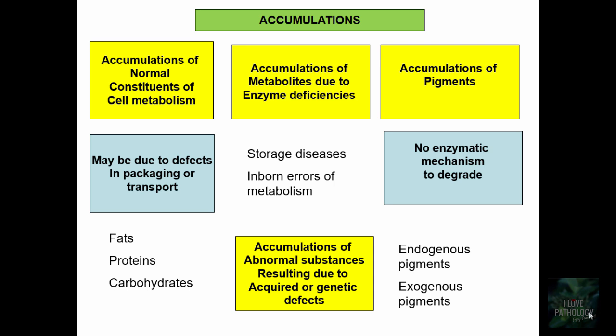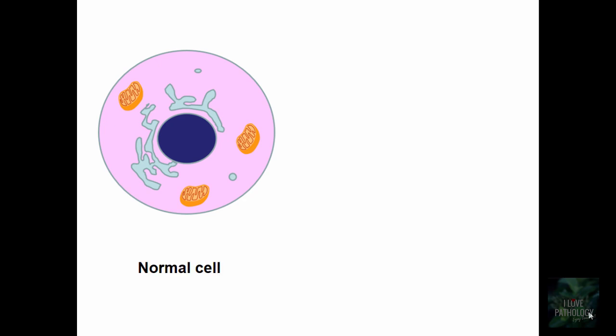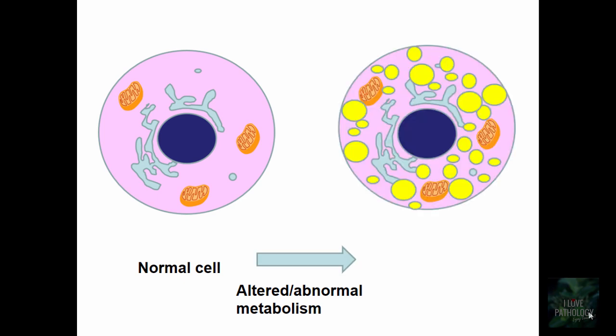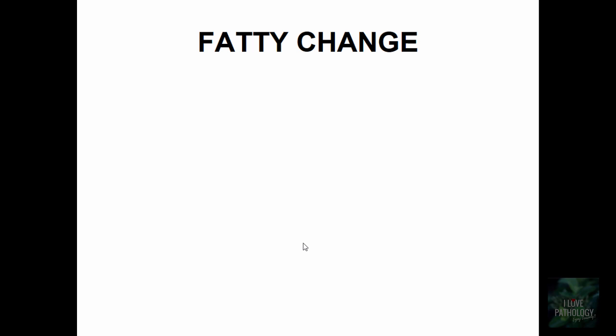Lastly, there could be accumulation of abnormal substances resulting from acquired or genetic defects. The most common example is alpha-1 antitrypsin deficiency. When there is altered or abnormal metabolism in a cell, it can result in accumulation of substances — in this case, accumulation of fat in the cell, which is what we will be discussing in the next few minutes.